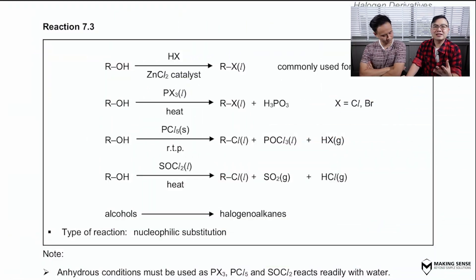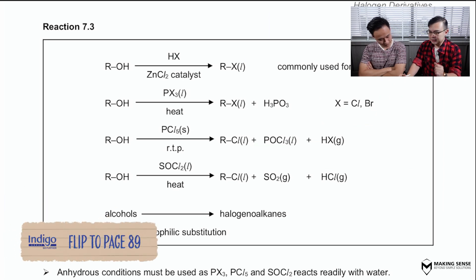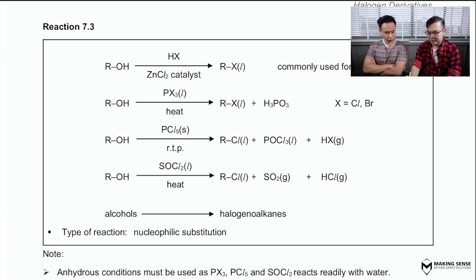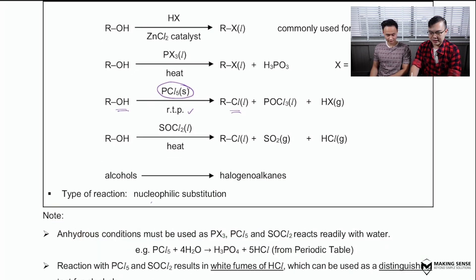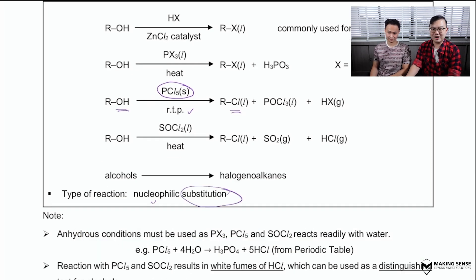The last reaction might be a little bit new to you guys, but I'll just briefly give you an idea about it. We're going to start off by using an alcohol to turn it into a haloalkane. In this case, I'm going to use my favorite reagent and condition. My favorite is actually PCl5 in the solid state, done at room temperature. Since I'm using PCl5, I'm going to replace the OH with the Cl. The type of reaction is going to be known as a nucleophilic substitution reaction.